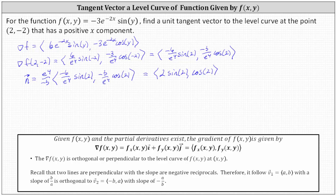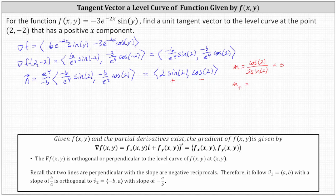The slope of this vector perpendicular to the level curve equals the y component cosine two divided by the x component two sine two. It's important to recognize that two sine two is positive and cosine two is negative, so this slope is negative. The slope of the tangent vector, which must be the negative reciprocal, would equal the opposite of two sine two divided by cosine two.